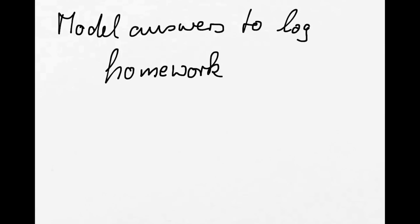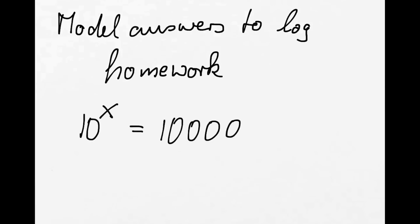The first question was solve for x. We have 10 to the power of x equals 10,000. In order to get x, we need to get rid of this '10 to the power of'. We know that '10 to the power of something' and log are the inverse operations, so we can inverse the whole thing with log.